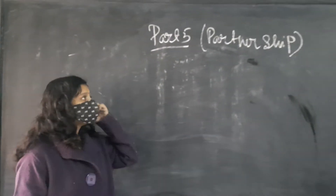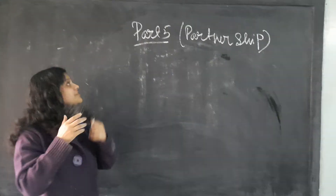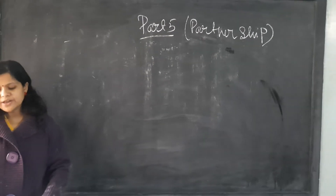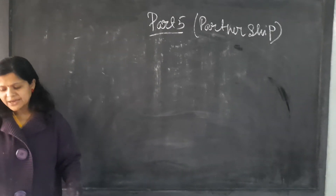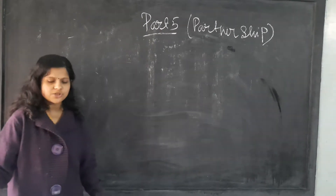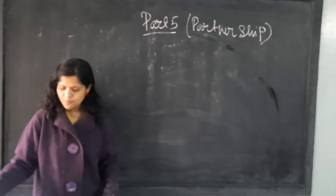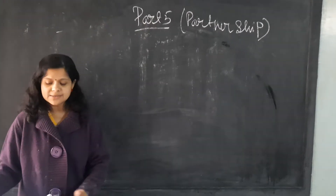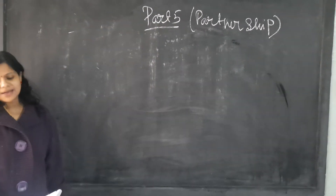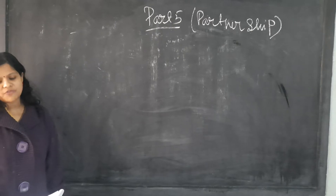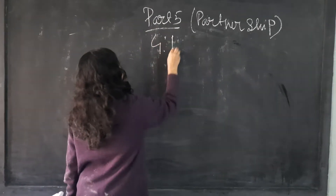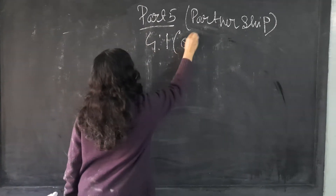Good afternoon students. This is the fifth session of Partnership. Continuing with the same type of sum where we have to find out the sacrificing ratio and new profit sharing ratio. A and B are partners sharing profit in the ratio of 4 is to 1. That is your old ratio.